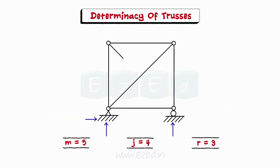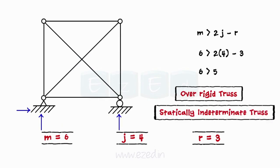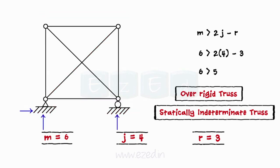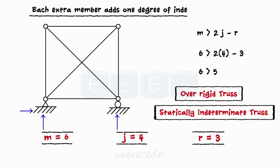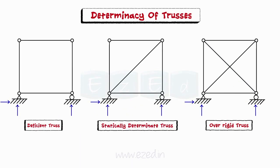Now, we will add another member between any two of the existing joints. Then, we have six members, four joints, and three support reactions. Using the relation, we find that it is an over-rigid truss. Thus, it is a statically indeterminate truss. Hence, we cannot analyze all the members of the truss, as we will be unable to find all the member forces. This is undesirable in analysis of trusses, as each extra member adds one degree of indeterminacy. Thus, we have learnt how adding or removing one member can make a truss statically determinate or indeterminate.